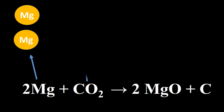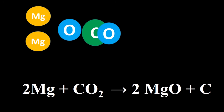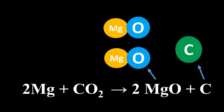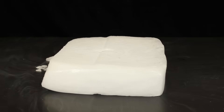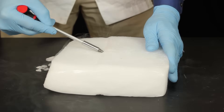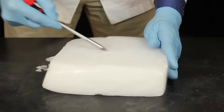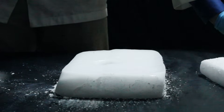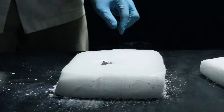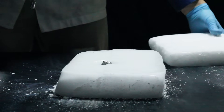So when you expose burning magnesium to carbon dioxide, the reaction continues instead of stopping. Let's take a look. First, take a block of dry ice — dry ice is the solid form of carbon dioxide. Chisel a small hole in the dry ice where you can place your magnesium, then ignite the magnesium with some kind of flame.